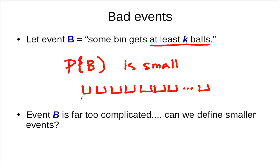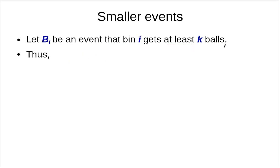This event is far too complicated to analyze on its own as just one big event. So we want to define smaller events. Event B talks about some bin, and we have already analyzed one bin — the probability that one particular bin gets at least k balls. Among the n bins, we want to say the probability that at least one of them gets at least k balls. So it is natural to define: let B_i be the event that bin i gets at least k balls. We have already analyzed this — the probability of B_1 is at most (e/k)^k.